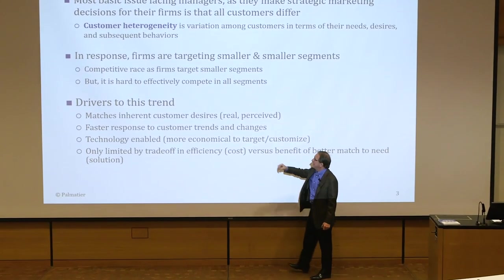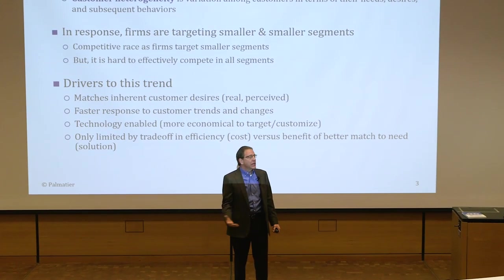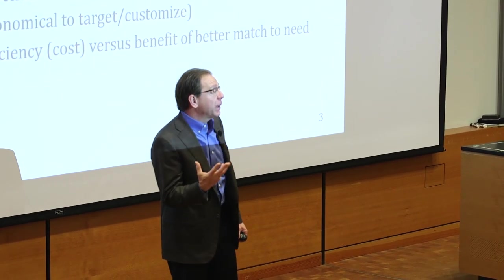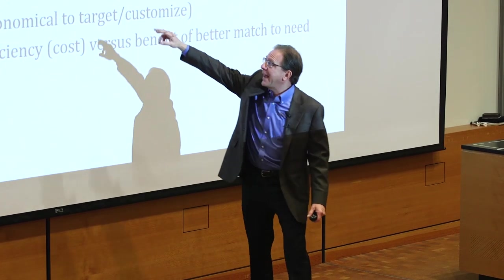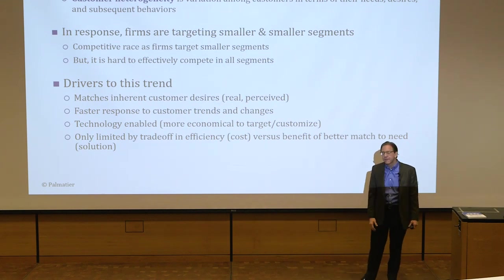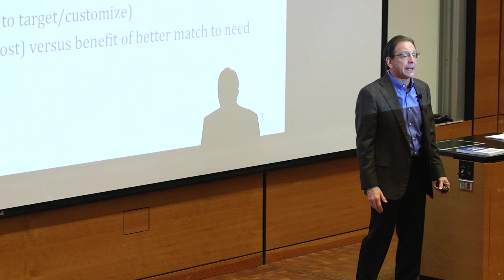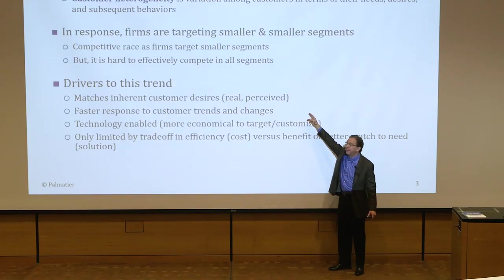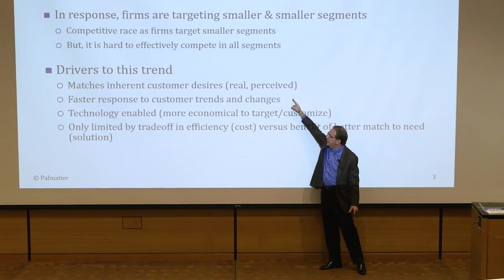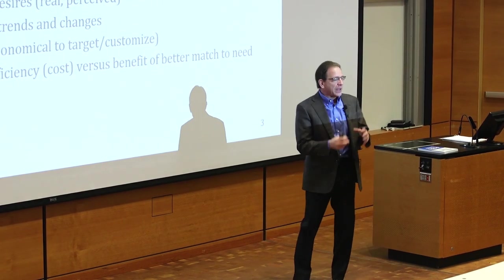The drivers of these trends — why customers are different and why firms are targeting smaller and smaller segments — first, customer needs do vary. If you look at a grocery store, you walk down the ketchup aisle and see how many different types of ketchup. Some people want it sweeter, some want it spicier. Customers have different needs, and marketers spend a lot of money to try to change customers' needs. If you look at Volvo, they spent a lot of money making the need for safety a bigger attribute when people purchase cars, and they were very successful.